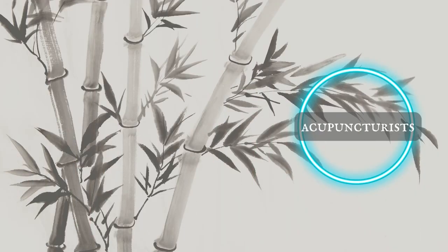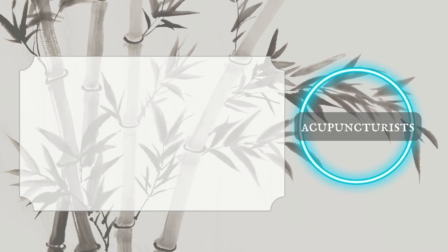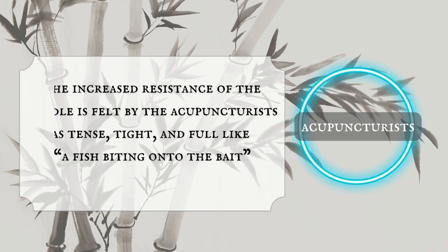Next is the characterization of De Qi found by the acupuncturist. Huang Di Nei Jing, one of four great classics in traditional medicine, states that De Qi should be found by the acupuncturist who also needs to concentrate in order to hold it. The increased resistance of the needle is found by the acupuncturist as tense, tight, and full — like a fish biting onto a bait. This sensation is called needle grasping.